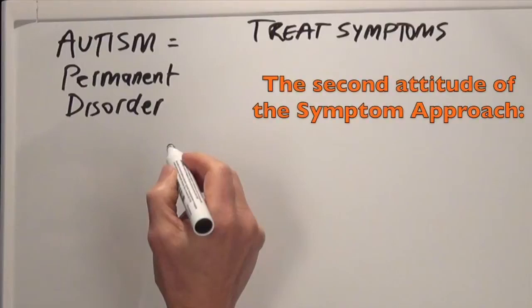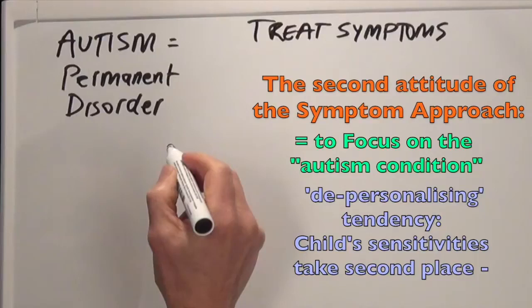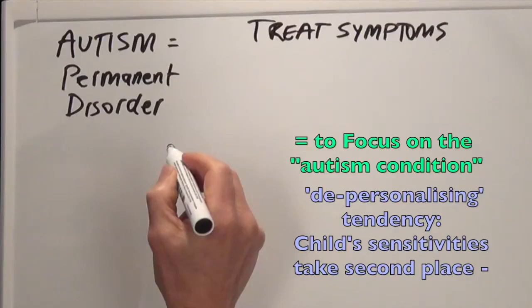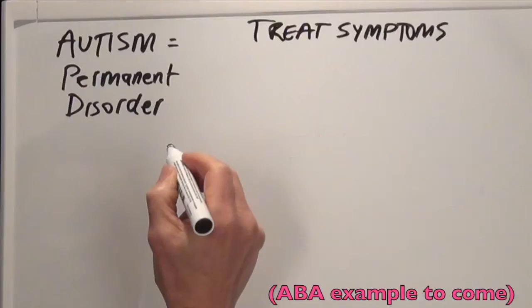The second attitude produced by the symptom approach is a tendency to focus on the autism condition rather than on your boy or girl, which has the potential to depersonalize your child, meaning his or her sensitivities and personal needs take second place. It doesn't have to be this way, but with a common therapy called ABA, sensitivities do take second place, and I'll be giving you an example of that in a minute.